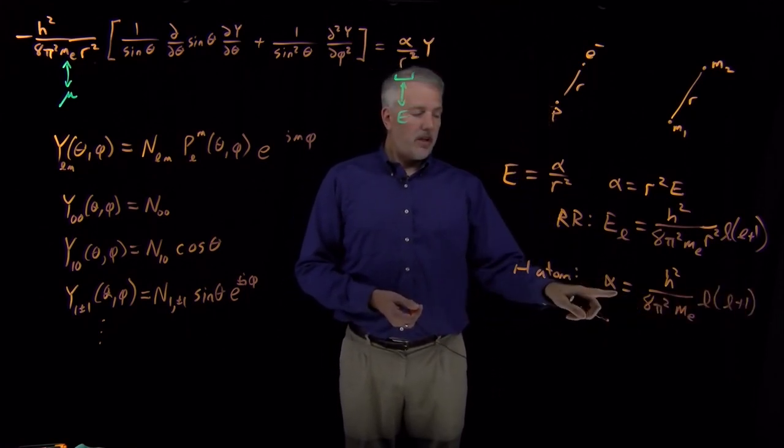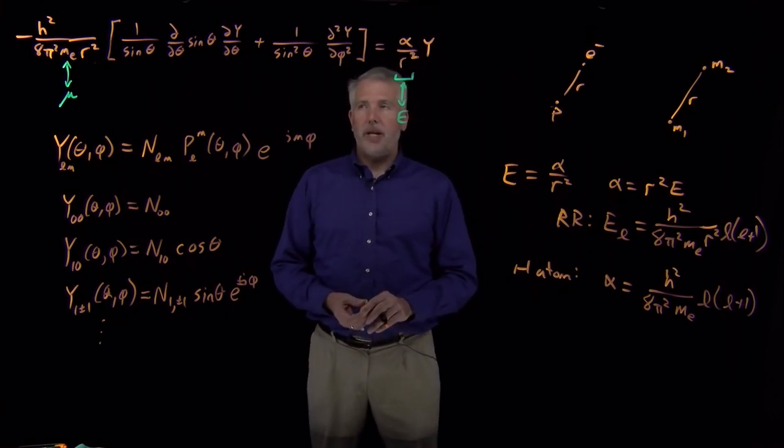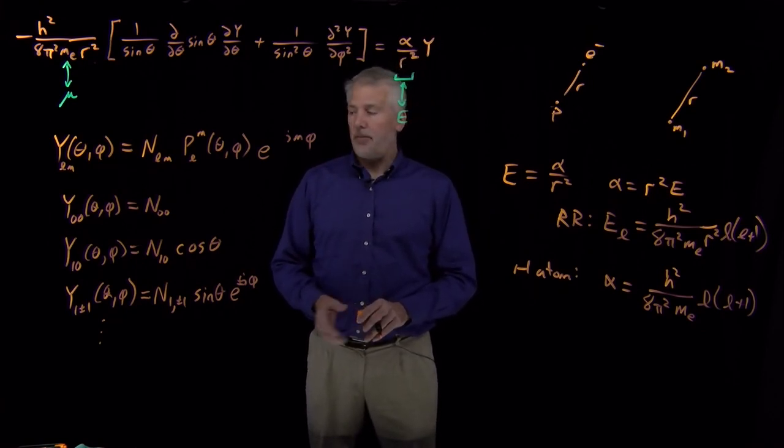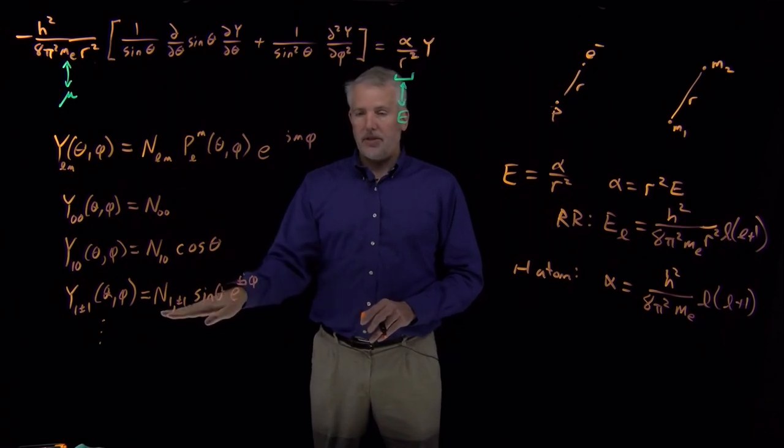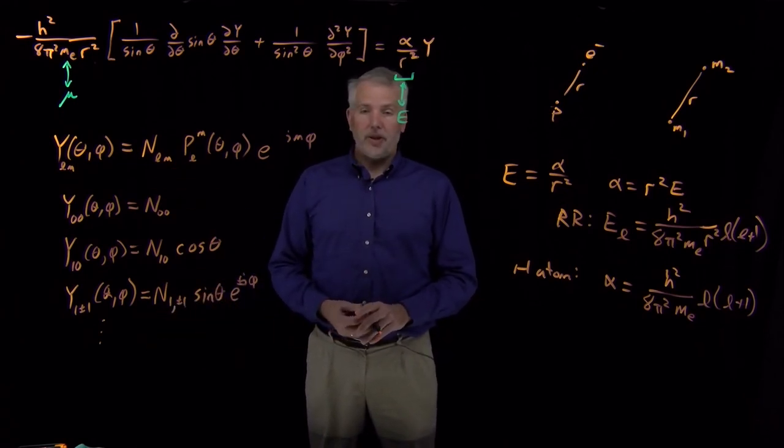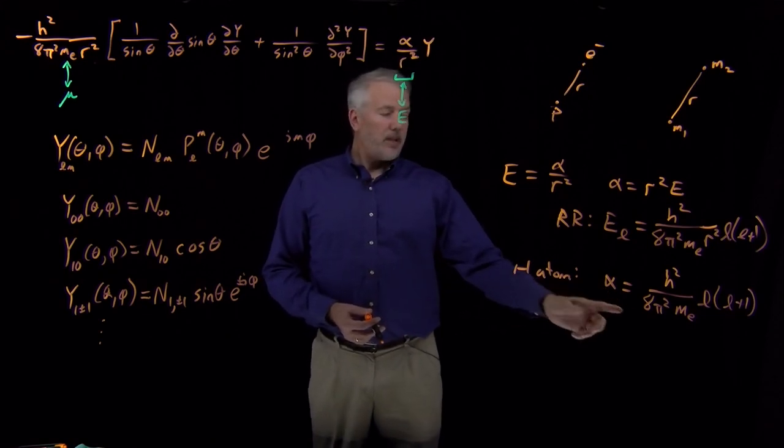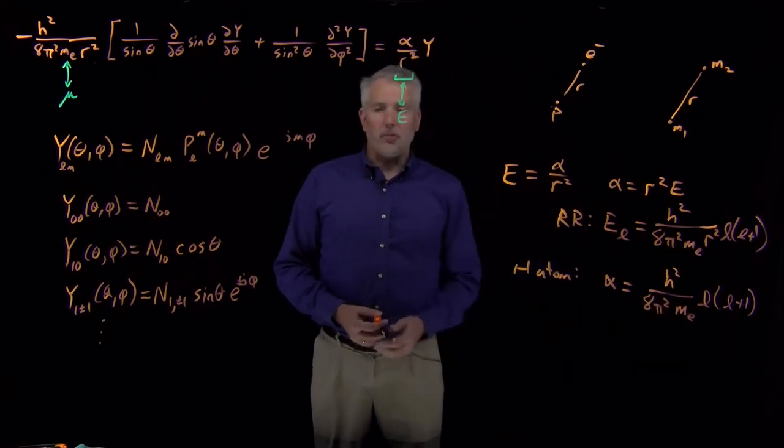So that's the significant conclusions we've got so far for the angular behavior of an electron in a hydrogen atom. It obeys any one of these functions for the angular component of the wave function, and the value of alpha that we'll need to solve the radial equation is this collection of constants times some quantum numbers.